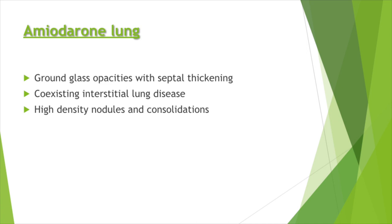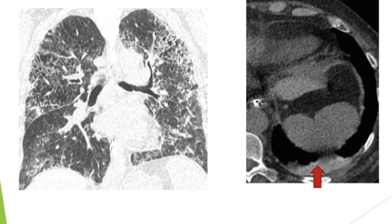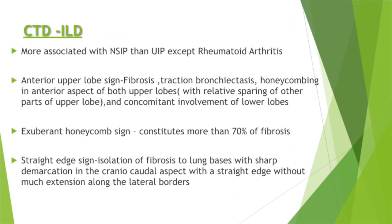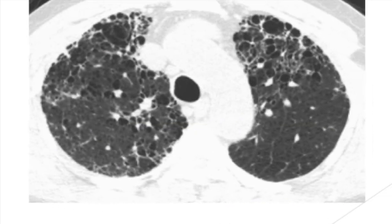In amiodarone lung, we get ground glass opacities and septal thickening coexisting with interstitial lung disease, but we also get high-density nodules and consolidations because of the iodinated chemistry of amiodarone. Connective tissue disorder-related ILD is more associated with NSIP than UIP, except for rheumatoid arthritis where UIP is more common. A recent paper describes three signs associated with CTD-ILD: the anterior upper lobe sign, exuberant honeycomb sign, and the straight edge sign.